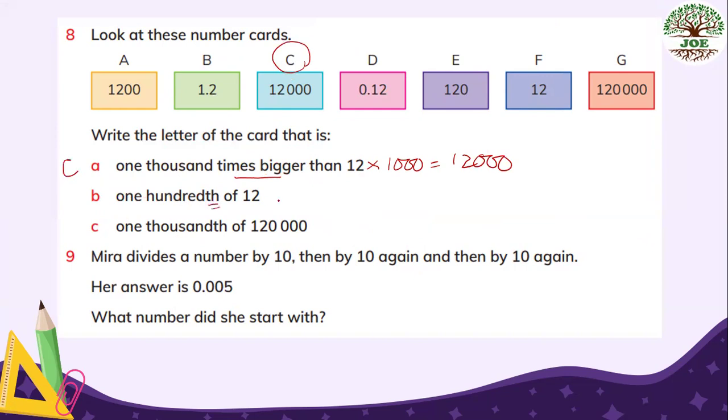B, 1 hundredth of 12 is 12 divided by 100 times smaller. So this is 0.12. This is small. So this is T. So T for B. And C, 1,000th of 120,000. So divided by 1,000. So 3 places smaller. These 3 zeros cancel out. And the number is 120. This is E. E for C.